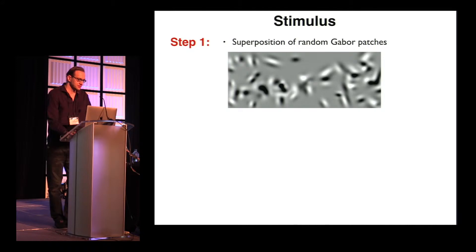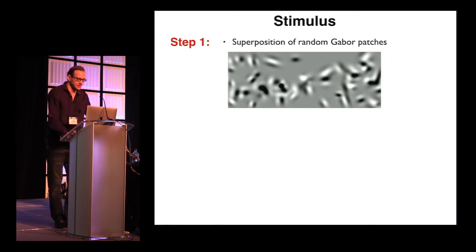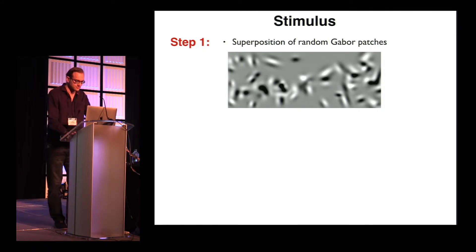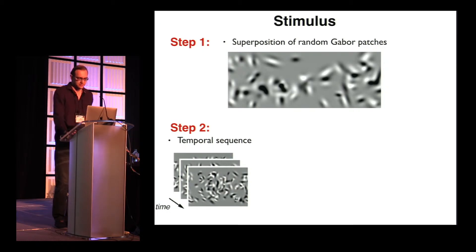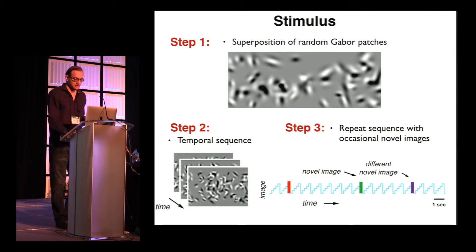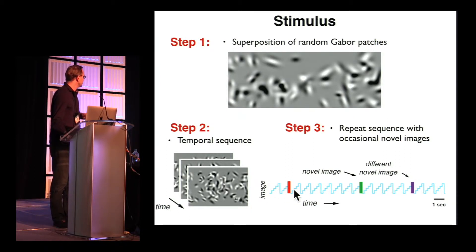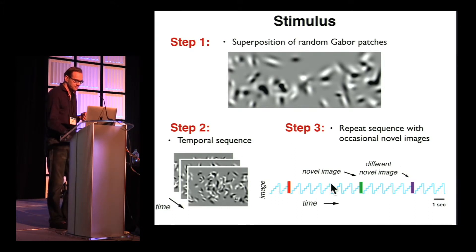For the stimuli, we wanted a set of images with the same statistics but different detail, which drive V1 neurons well. We designed our images as a random superposition of Gabor patches, forming a temporal sequence with those images. To create familiarity, we took the sequence and repeated it many times — abstracted as a staircase function where each level represents one image. Occasionally, we substituted one of the images with a novel image drawn from the same distribution.